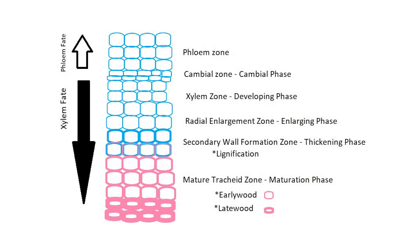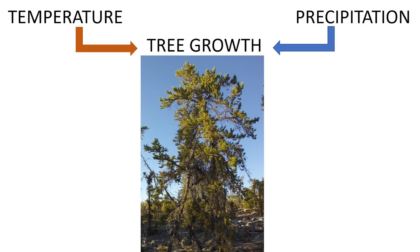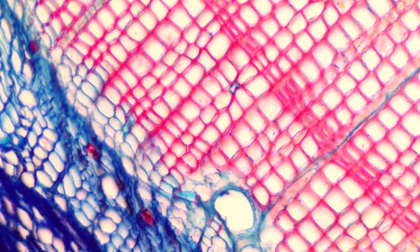To do this, we can look at the impacts of weather on cell production. Throughout the growing season, variation in precipitation and temperature impacts the rate of cell development.